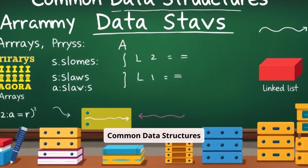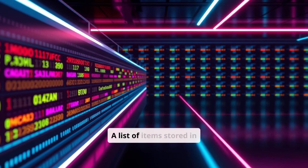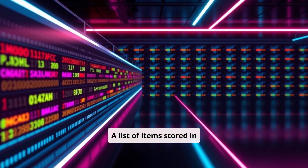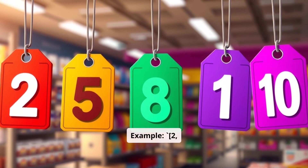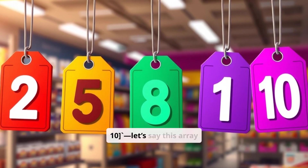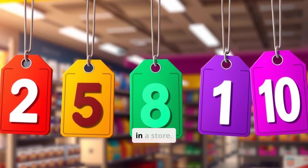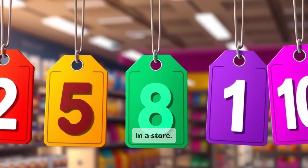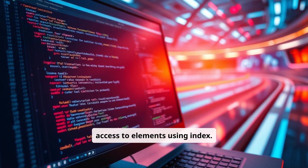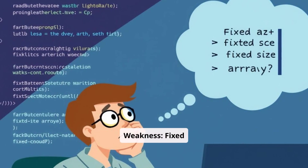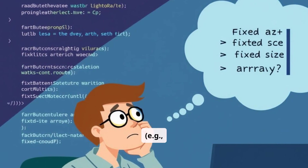Common data structures. Arrays: a list of items stored in contiguous memory. Example: [2, 5, 8, 10] — let's say this array stores the prices of items in a store. Strength: fast access to elements using an index. Weakness: fixed size in certain languages, for example C++.